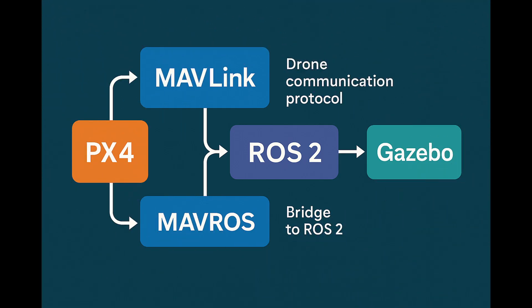PX4 doesn't work alone — it communicates with other tools. It sends and receives commands through MAVLink. We use MAVROS to bridge that MAVLink data into ROS2 so our custom ROS nodes can talk to the drone. And finally, Gazebo acts as the simulated 3D world, providing physics, visuals, and simulated sensors.